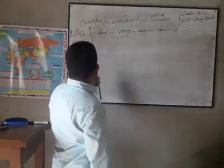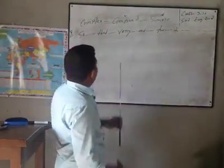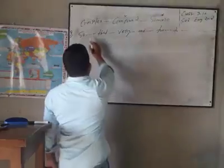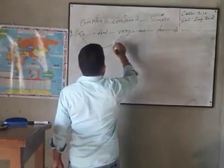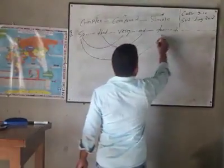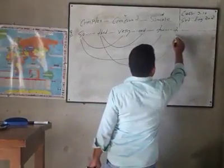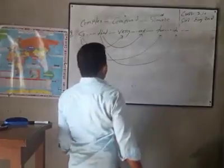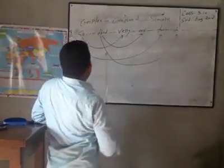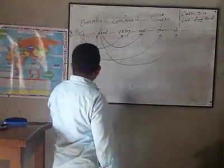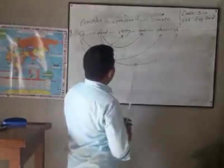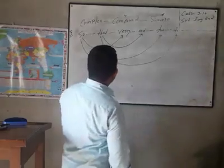This is another pattern. In complex sentence you will find 'so... that.' In compound sentence you will find 'very... and.' And in simple sentence you will find 'too... to.' That means: 'so' becomes 'very,' 'that' becomes 'and,' and in simple, 'so' becomes 'too' and 'that' becomes 'to.' In the complex sentence you will find 'so,' and in the compound you use 'very' instead. Where you find 'that' in complex, use 'and.' In the simple sentence, you use 'too' and 'to.'